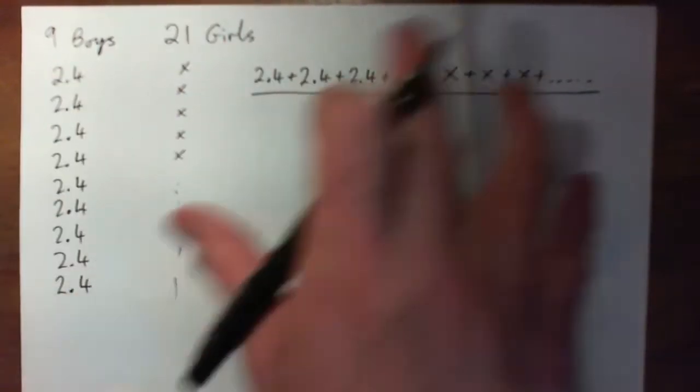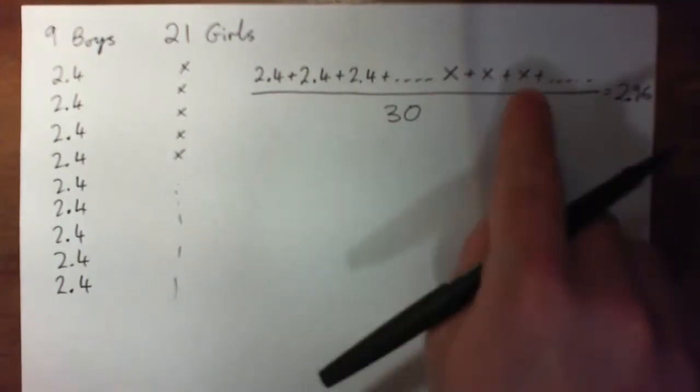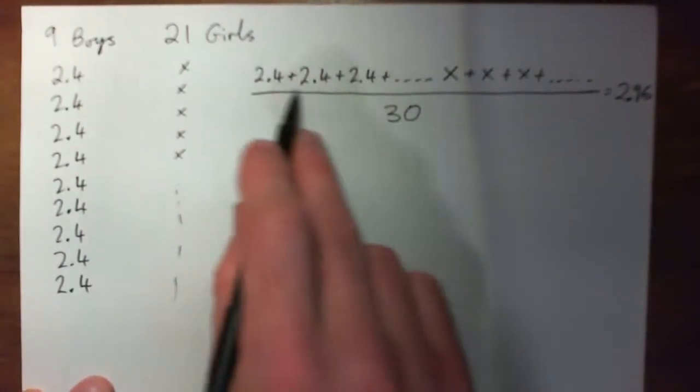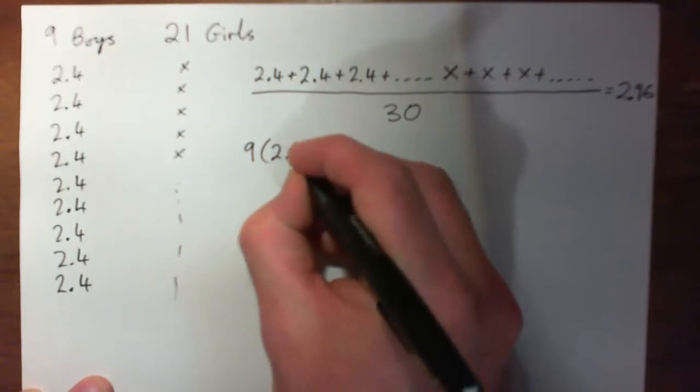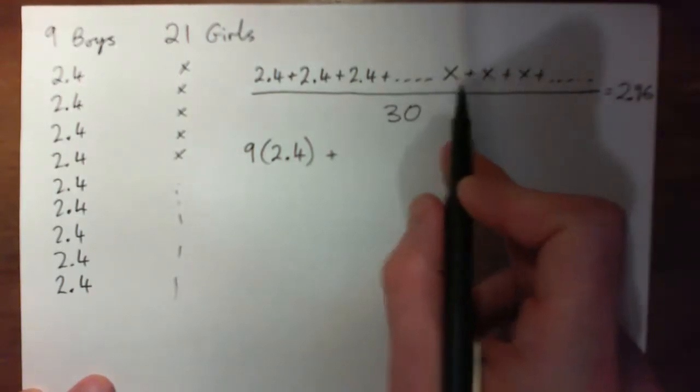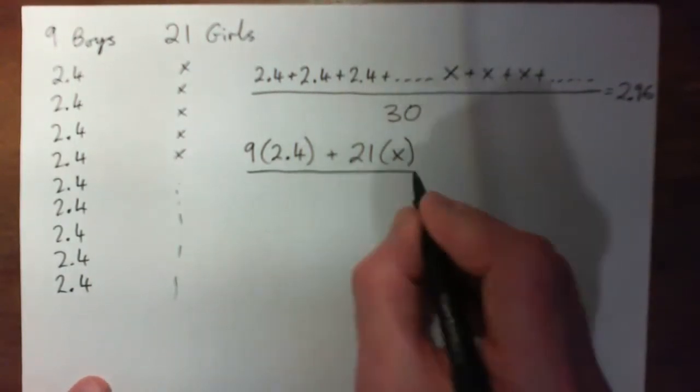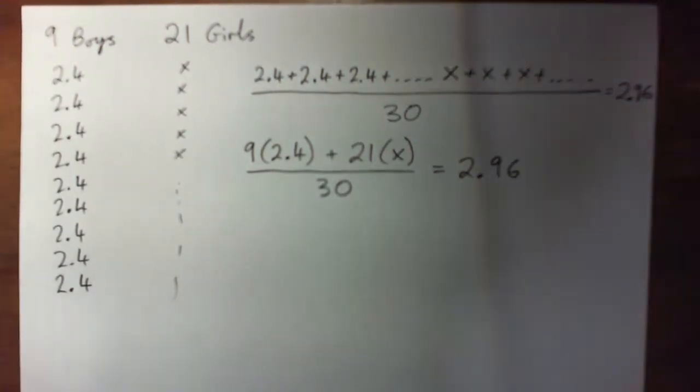And then we would divide by the total number of kids, which is 9 plus 21 is 30, and if I did all that, if I took all the scores and divided by 30, I would come up with the average of 2.96 for the whole class. But we're trying to find the girls' mean score and we don't know it. So it's the equivalent of having 9 times 2.4 plus 21 times X, and dividing that by the total number of kids, 30, to get the average 2.96.